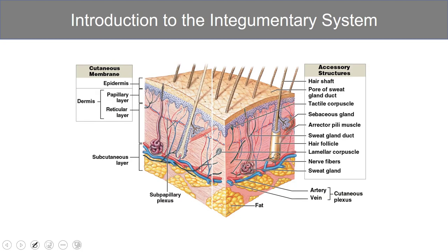Here we have a diagram of the cutaneous membrane and the hypodermis. You can see the epidermis is the superficial-most region. You have the dermis underneath, and then down here, where all the fat tissue is, you have the hypodermis. There's a lot going on in the skin: we have hair follicles, sweat glands that deliver sweat to the surface, oil glands that deliver their product into the hair follicle, lots of nerve endings, and even some muscle in terms of the erector pili muscle.